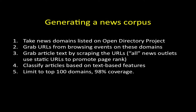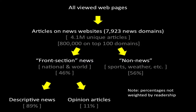For these 100 domains, we have an informative prior and there's past work on the ideological stance of the outlet. What we're going to do is take all viewed web pages, restrict to articles on news websites — that's 800,000 unique articles. We're going to classify these into what we consider front section news: national and world news, stuff that would show up in the first section of the New York Times or the Washington Post. Stuff in the sports, weather, and entertainment section, we're not interested in — we try to eliminate that from the corpus. From the front section news, we try to separate out descriptive reporting from opinion articles, using supervised learning each time.